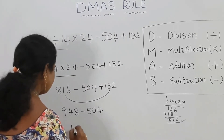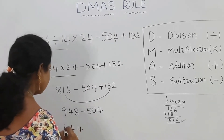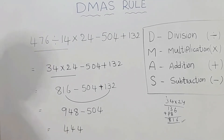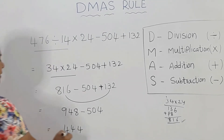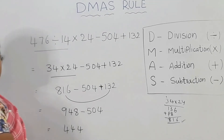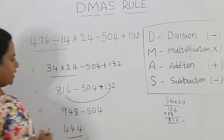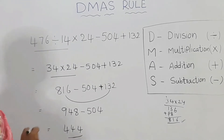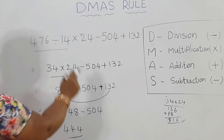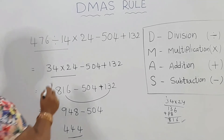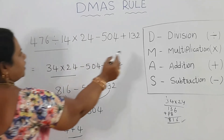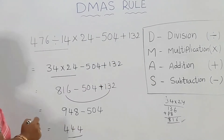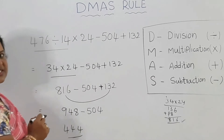948 minus 504 equals 444. So according to DMAS rule, the answer is 444.